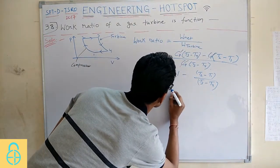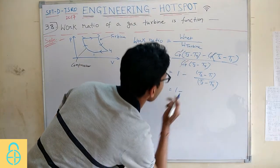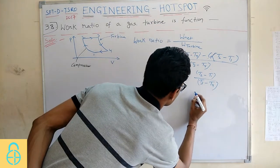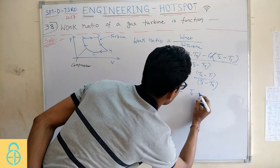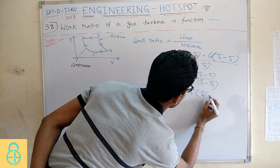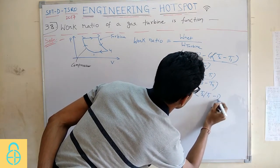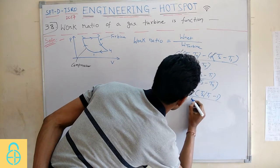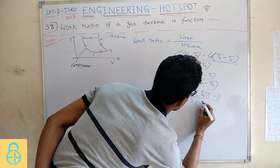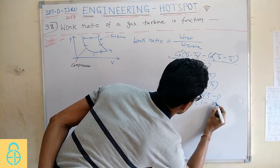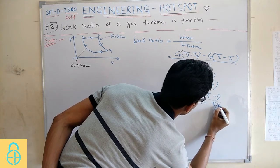Now, what you can do? Take T1 outside from the numerator, it will be T2 by T1 minus 1, and take T3 outside from the denominator, it will be 1 minus T4 by T3.